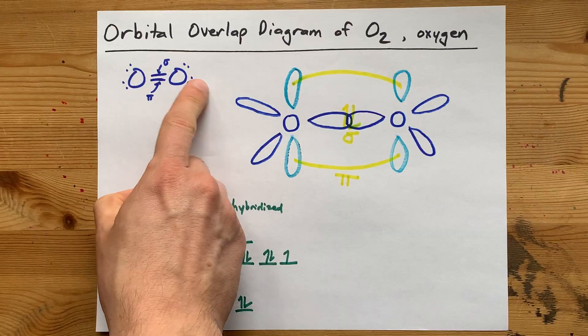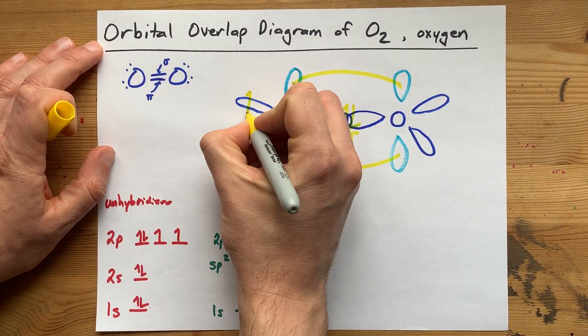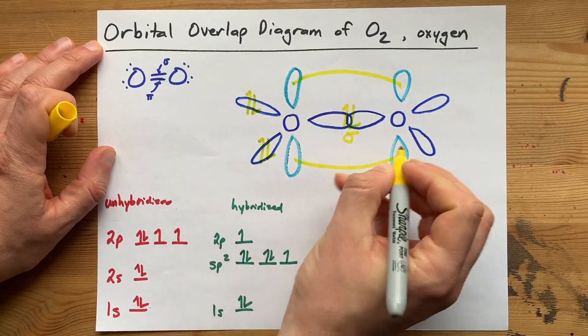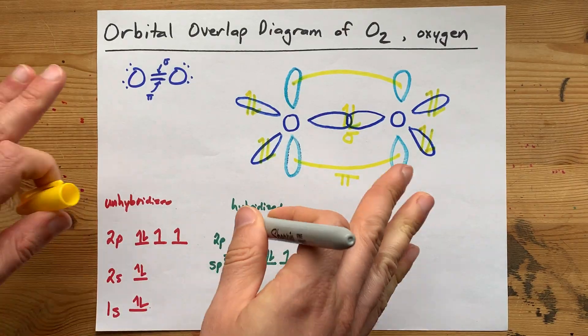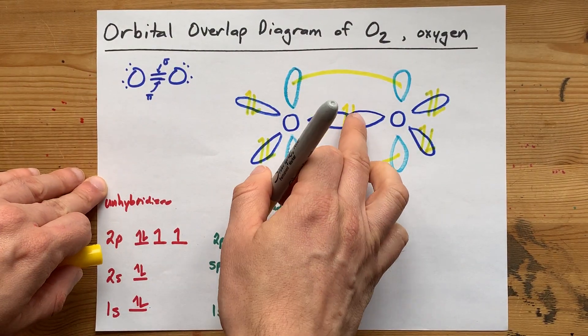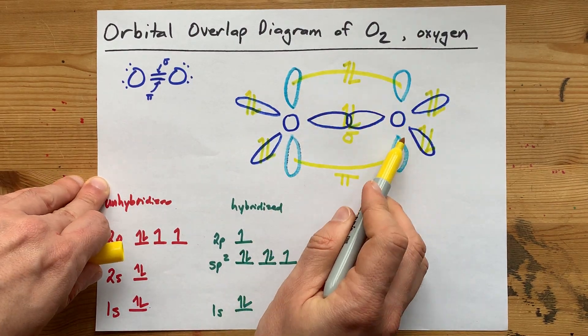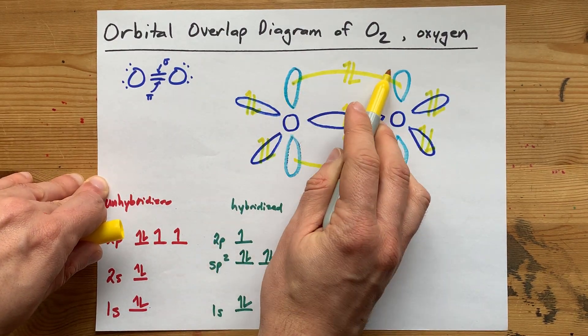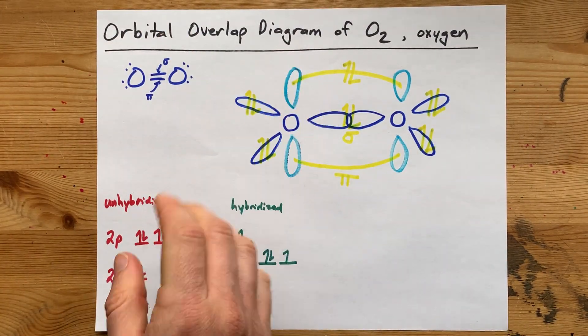And in addition, I have two lone pairs on each oxygen. That's what the other hybridized orbitals were for. There's a lone pair. There's a lone pair. There's a lone pair. And there's a lone pair. If you really want to put the electrons in the pi bond, you can do that too. You can think about them circulating, like in a circle here, but that's not how electrons move. So don't worry about it.